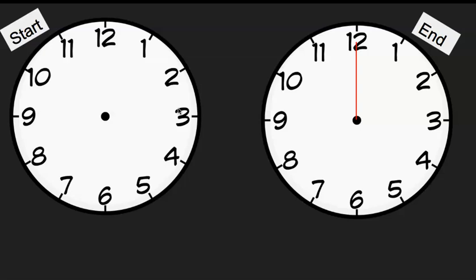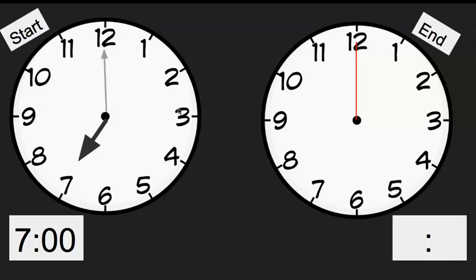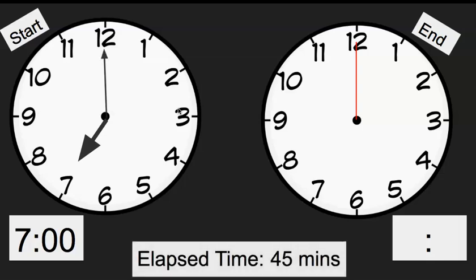So you get up at 7 a.m. and you have 45 minutes to be ready for school. What time do you have to be ready by? Here's seven o'clock — I'm going to show that on my first clock. That's my start time, and I know my elapsed time is going to be 45 minutes. That's how much time it is from the beginning of getting ready to the end.